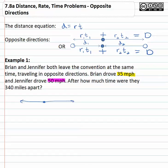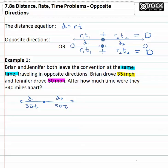Brian drove thirty-five miles per hour, so his distance is rate times time: 35 times t. Jennifer drove fifty miles per hour, so her distance is 50 times t. We don't know how long either traveled, but we know it happened at the same time — that's important — so we use t for both.